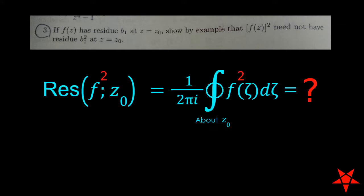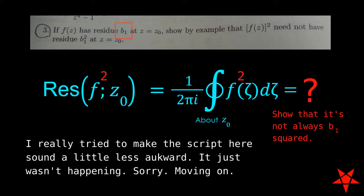We aim to show that the residue of f of z squared at z0 is not necessarily the square of the residue of f of z at z0. We'll be doing this by example, and while the exercise only asks us to do this once, I thought it would be fun to do it with two different functions.